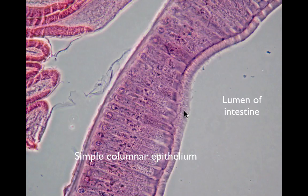Once absorbed, the nutrients move through the epithelial cells and are released into the hemocele, or pseudocoelom. Nutrients are distributed throughout the body by the liquid contained within the hemocele.